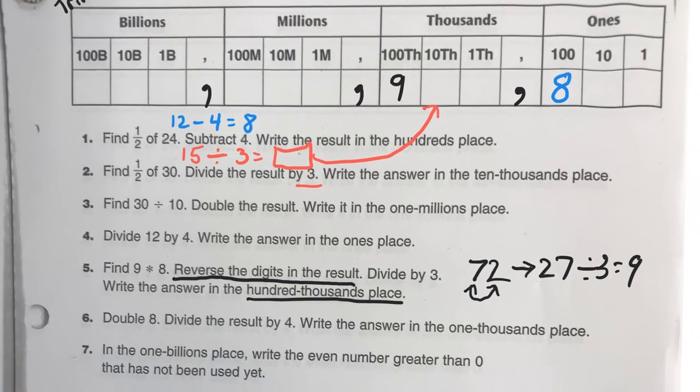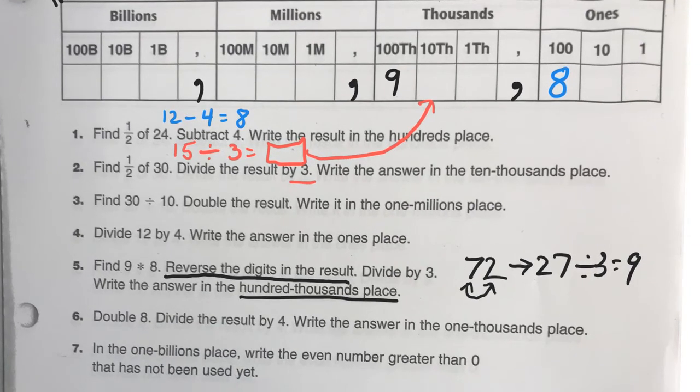So, how about this next one? Write the even number greater than 0 that you have not used yet. So, what are your choices for even numbers? There's 2, 4, 6, and 8. And have we used 8? Yes, we've used 8. So, I'm going to cross that out.